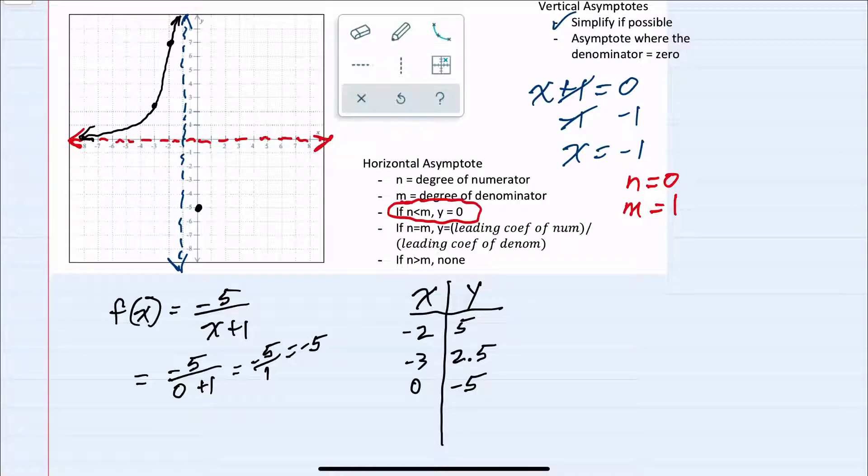Substituting one more value to the right of the vertical asymptote, I could substitute 1. Replacing x with 1 gives me a negative 5 over 2, or a negative 2.5. So plotting the point 1, negative 2.5 would be here.